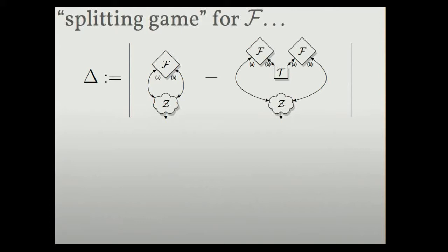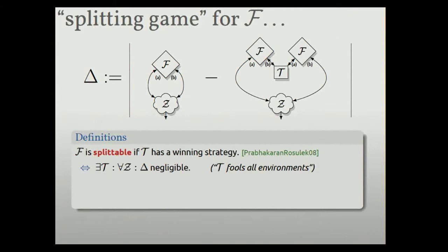So with this game, we say that F is splittable if there's a winning strategy for T. So there's a way for T to behave that fools all Zs into thinking these two are the same, making these two pictures look the same. Conversely, I'll say that F is strongly unsplittable if there's a winning strategy for Z, the environment. So there's a way for Z to send inputs and look at the outputs such that no matter what T is doing, he'll be able to tell the difference between these two interactions.